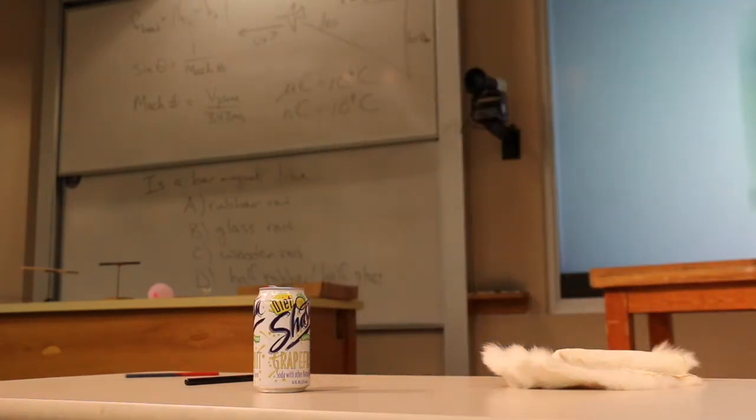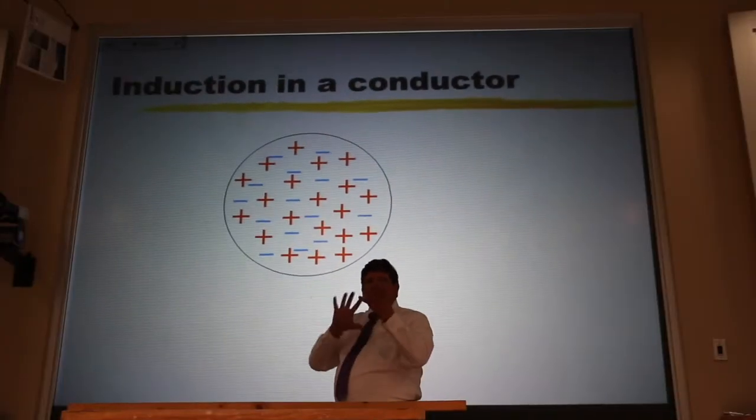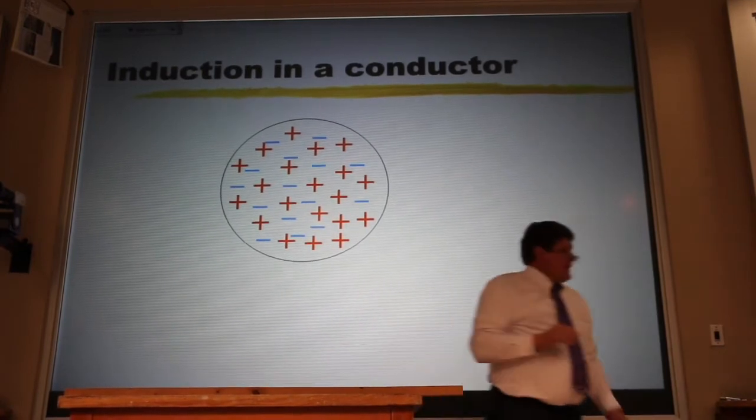So, if I represent that can, that neutral can, as a bunch of protons and electrons, if it's neutral, I should have just as many electrons as protons.